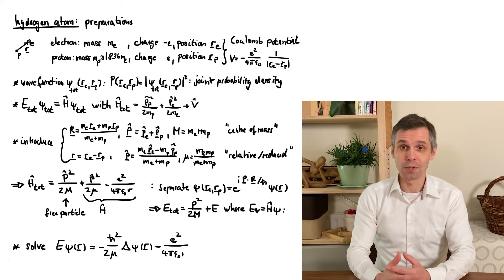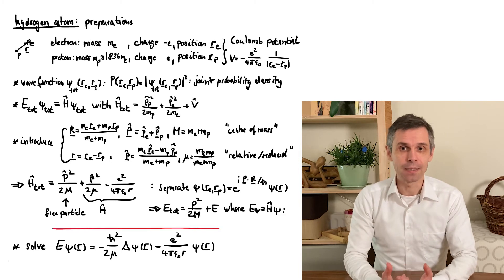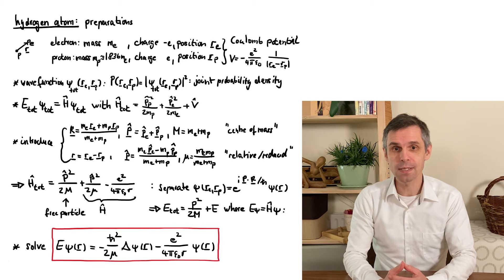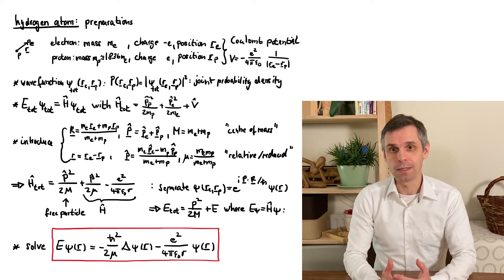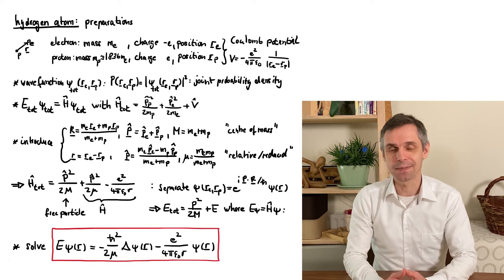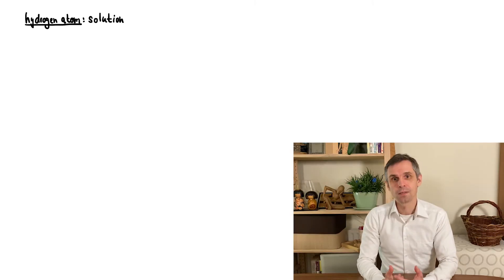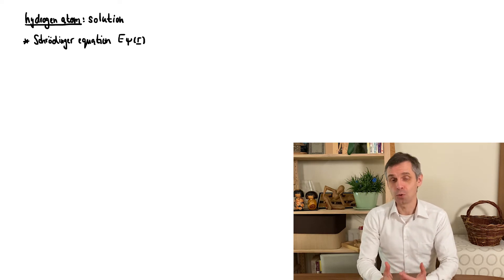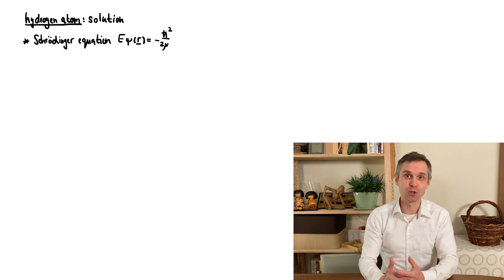I will walk you through the solution, which won't take long even though it involves yet another class of orthogonal polynomials. And then we spend quite a bit longer on the discussion and see what we can learn from these solutions. So we want to solve the Schrödinger equation for the effective particle of reduced mass μ in the presence of the Coulomb potential, which is a central potential.